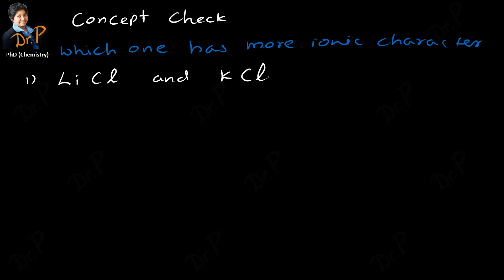We have a common anion, chlorine, so we can think of similar size and the same charge. When it comes to lithium ion and potassium ion, potassium is two rows below lithium, so potassium has a bigger size than lithium. Therefore, the potassium cation will also be bigger than the lithium cation. We are dealing with a common anion and two different cations — the larger one has a smaller charge density.